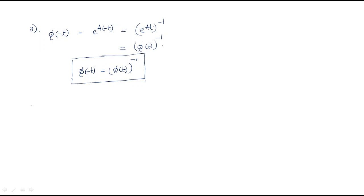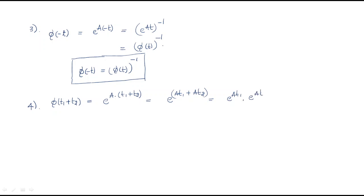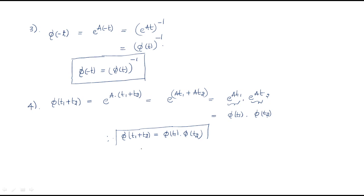The fourth property: if we use a combination of two time periods, phi(t1 plus t2) — substituting t1 plus t2 — we can write e^(A(t1 plus t2)) equals e^(At1) times e^(At2). Writing e^(At1) as phi(t1) and e^(At2) as phi(t2), we get: phi(t1 plus t2) equals phi(t1) times phi(t2). This is another key equation.